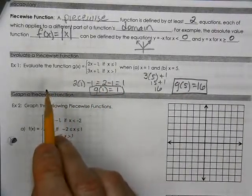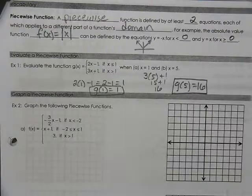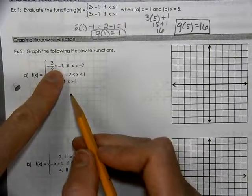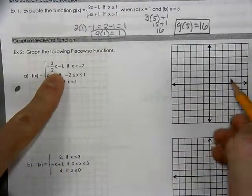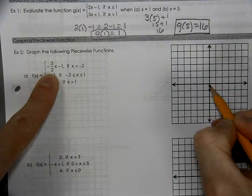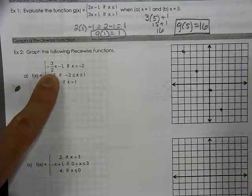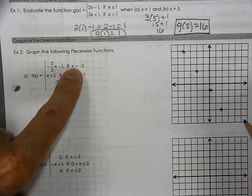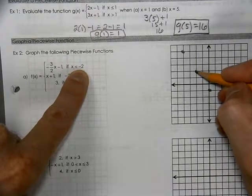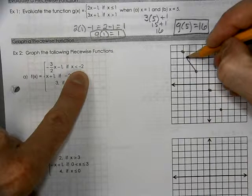That's how you evaluate a function when you're working with piecewise. Now we're going to graph the following piecewise functions. We have three equations to graph. We're going to start at negative one and do a slope of negative three halves, then positive two, positive three, negative two. We connect the dots that are less than negative two, so we connect the dots to the left of that.